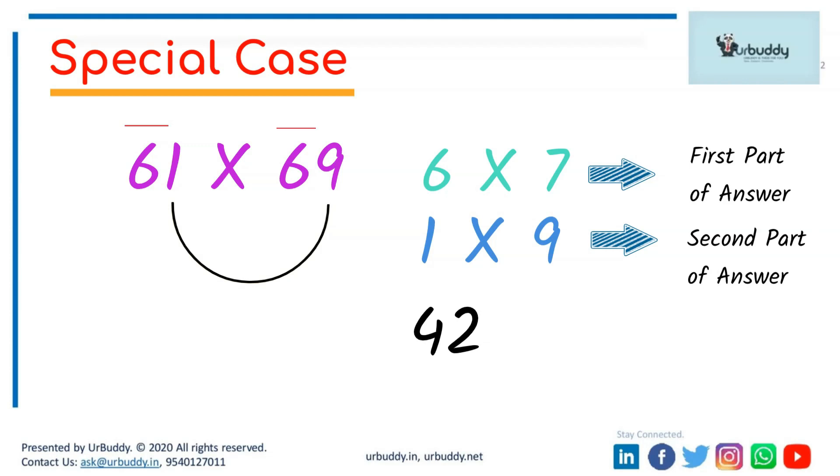You have to write 09 because the second part of the answer always has two digits. The second part of the answer always has two digits. So you will have to write 09 instead of 9. So the answer of 61 multiplied by 69 will be 4209. If you write 429, it will be wrong. 4209, remember two digits.